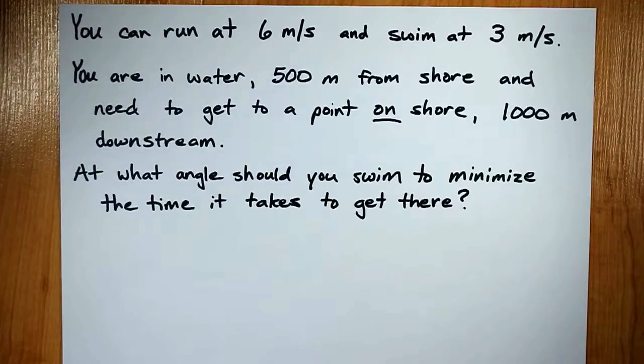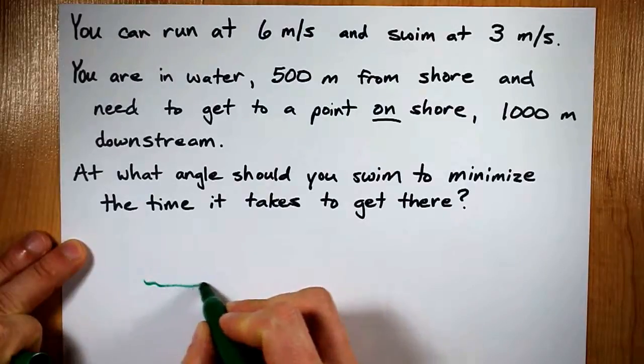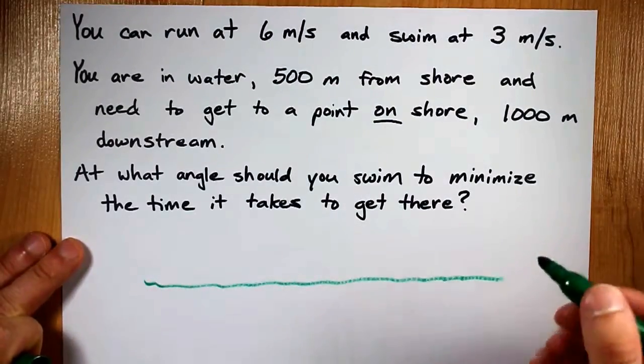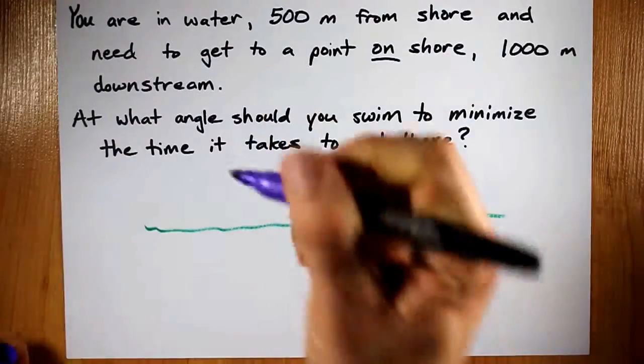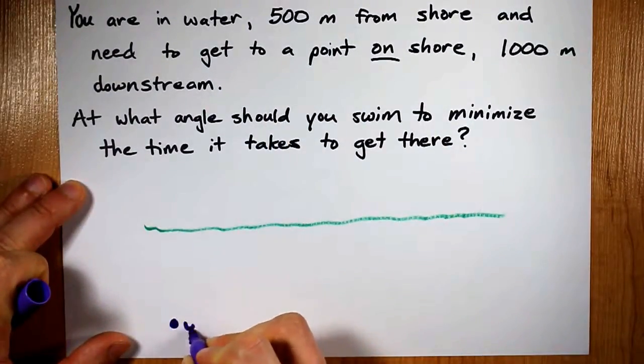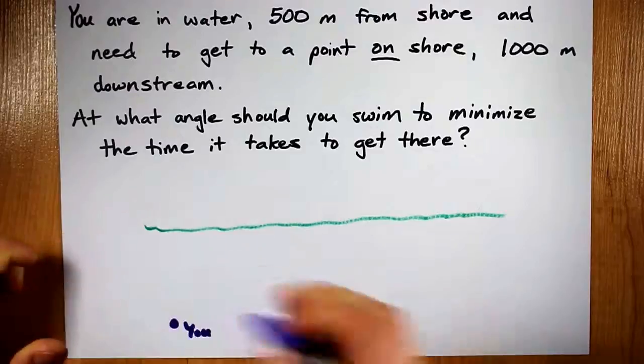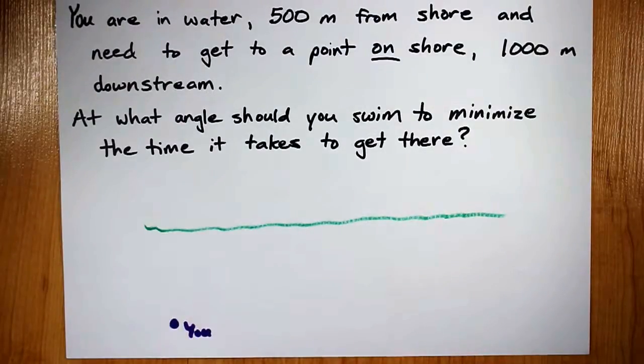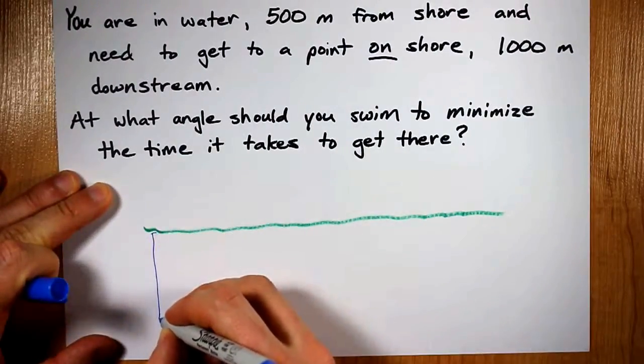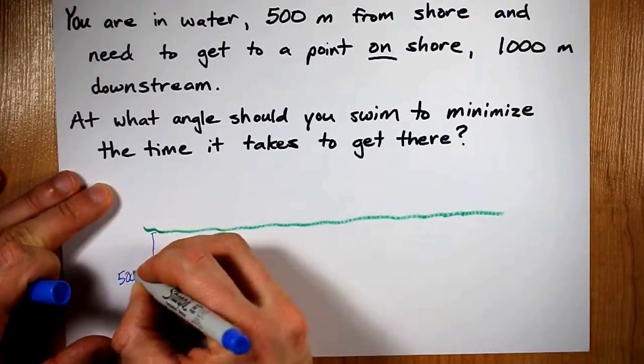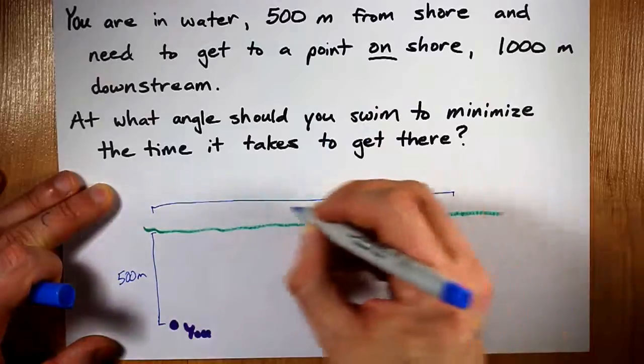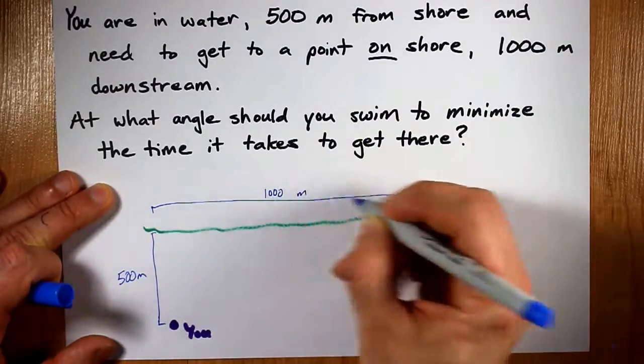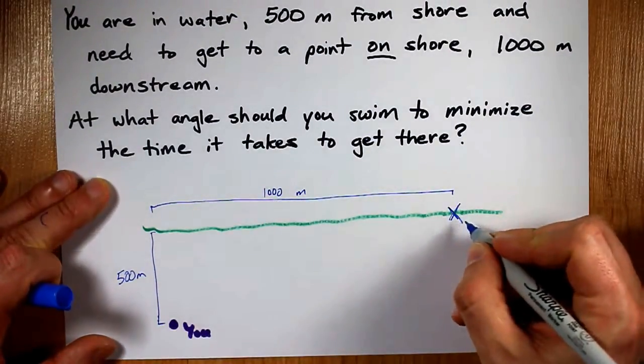Let's draw this for ourselves so we can see what's going on. I'm going to draw the shore here in green for grass, and I'm going to put you right here out at sea. Alright, what measurements do we have? Well, we know that we are 500 meters away from shore, and we know that that is 1,000 meters away from the point you want to get to.